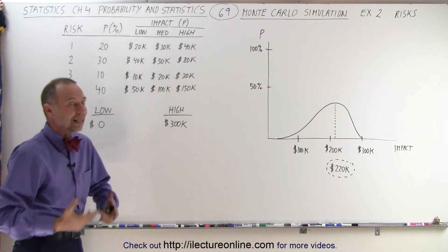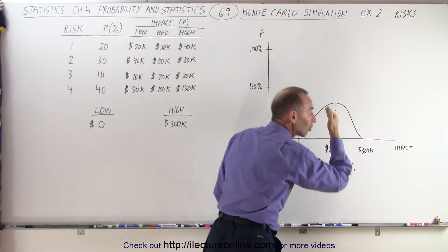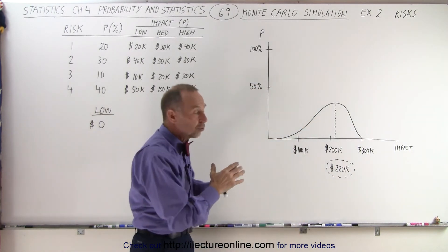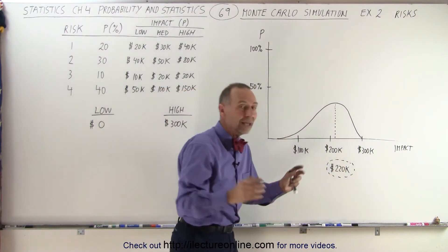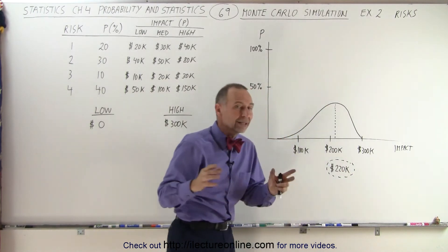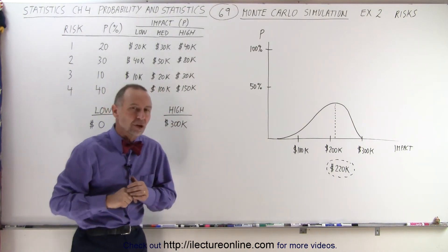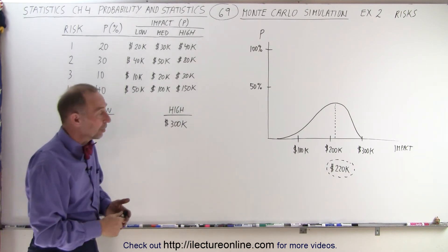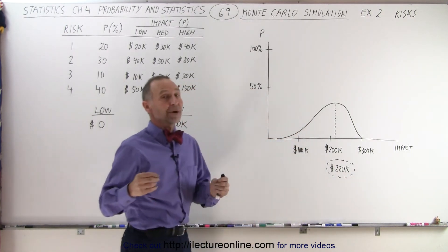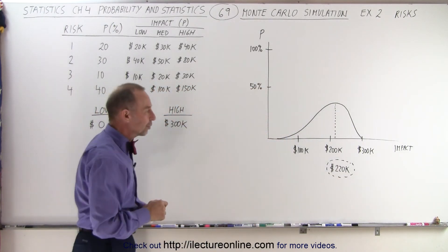Then we run the simulation many, many times over, and we'll get a curve that hits a maximum at some point. The most likely scenario is that the risks materialize to a certain extent and the cost to remedy them materializes to a certain extent. When we add all of that up, our simulation would show, for example, that we would have to pay an additional $220,000 to take care of all the risks that will have materialized at the estimated impact cost. That means we better have an additional $220,000 ready to go to take care of those risks when we execute our project.